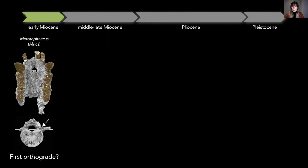Jumping to the early Miocene of Kenya, around 20 million years ago, we find the African Morotopithecus. This species is known from dentognathic material but also a few postcranial elements. Among these, paleontologists recovered a lumbar vertebra — an essential anatomical element to identify orthogrady. This vertebra is very interesting because its transverse process originates dorsally to the vertebral body, a trait typical of orthograde primates. We can therefore consider this species the first orthograde hominoid, although evidences are not 100% clear and doubts still remain.